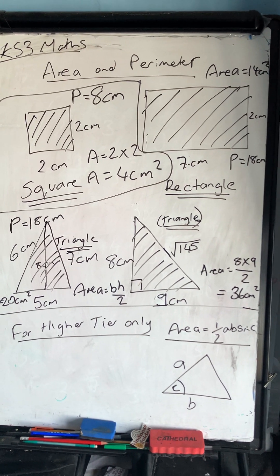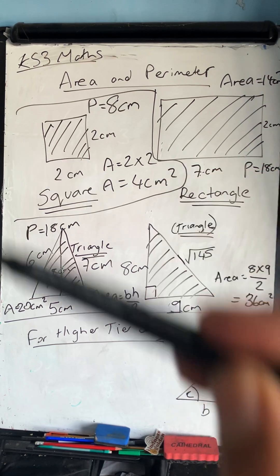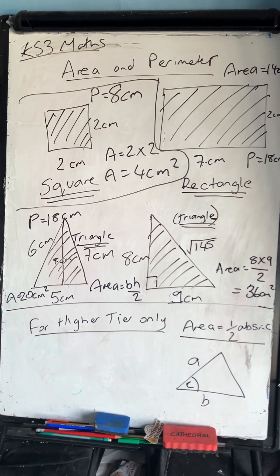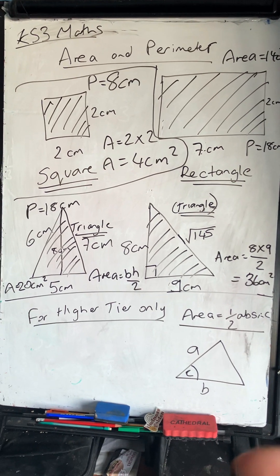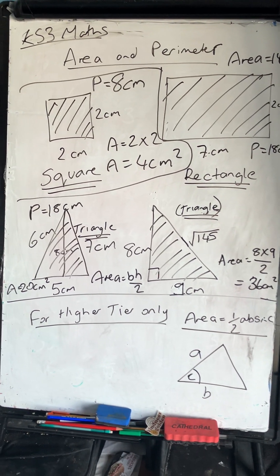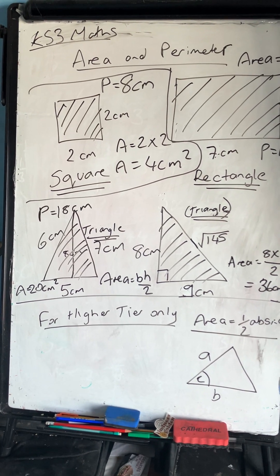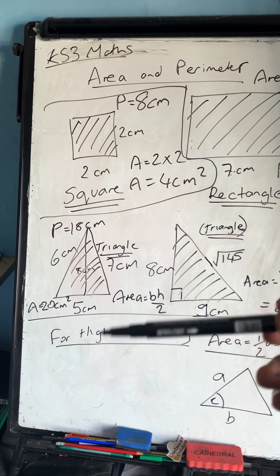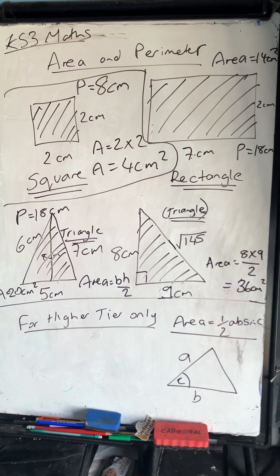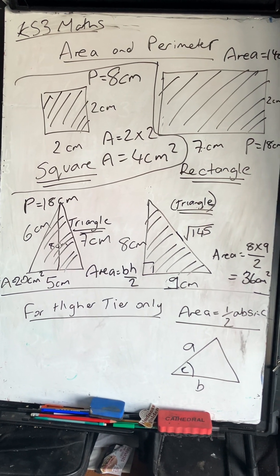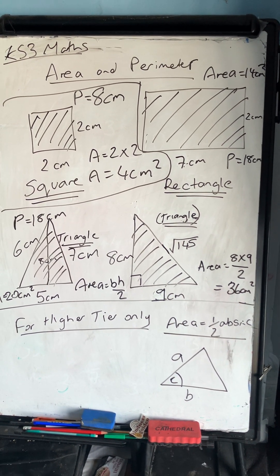To summarise: the perimeter of any shape is the distance around the shape; the area is how much space that shape covers. For a triangle, make sure you're using the perpendicular height and the base to work out the area. If you're not given those, you can use Pythagoras or trigonometry to work out any missing lengths in right-angled triangles — I have videos on Pythagoras and trigonometry in the description and playlist.